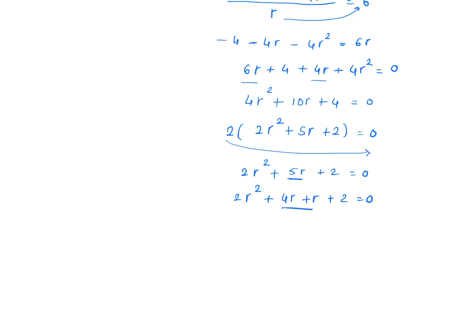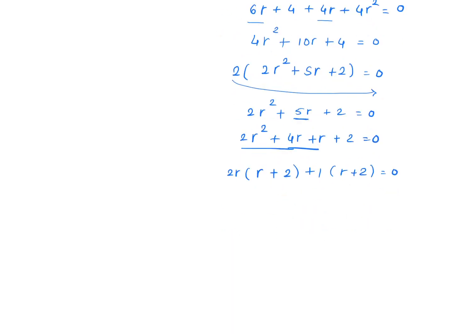We split 5r into 4r + r to factorise: 2r² + 4r + r + 2 = 0, giving 2r(r + 2) + 1(r + 2) = 0, so (r + 2)(2r + 1) = 0. Therefore r = -2 or r = -1/2.